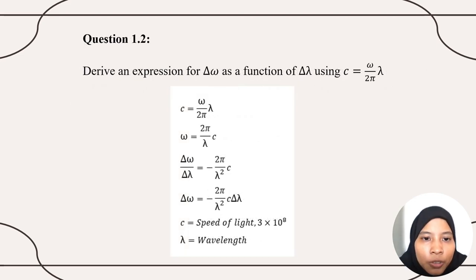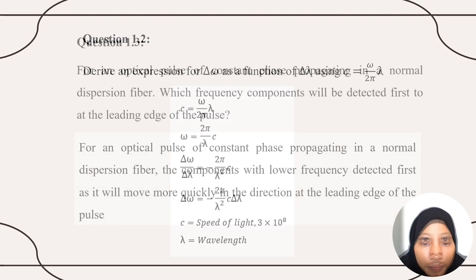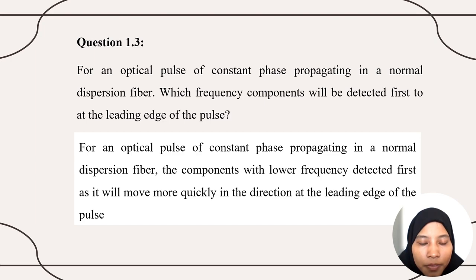For question 1.2: derive an expression for angular frequency as a function of delta-lambda using the formula C equals omega over 2-pi times lambda. The derivation yields: angular frequency equals 2-pi over lambda-squared times the speed of light times delta-lambda. For question 1.3: for an optical pulse of constant flux propagating in a normal dispersion fiber, the component with lower frequency is detected first, as it moves more quickly in the direction of the leading edge of the pulse.